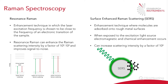Raman spectroscopy is an inherently weak scattering event, and compared to Rayleigh scattering, it only occurs one in a million times. Sometimes we might need to look at ways to enhance our Raman spectra, and there are two ways we can do this which require no modification to the Raman spectrometer itself: resonance Raman and surface-enhanced Raman scattering. Resonance Raman is a technique where the laser excitation frequency is chosen to be close to the frequency of an electronic transition. Typically, we see enhancements of 10² to 10⁶ and an improvement in signal to noise.